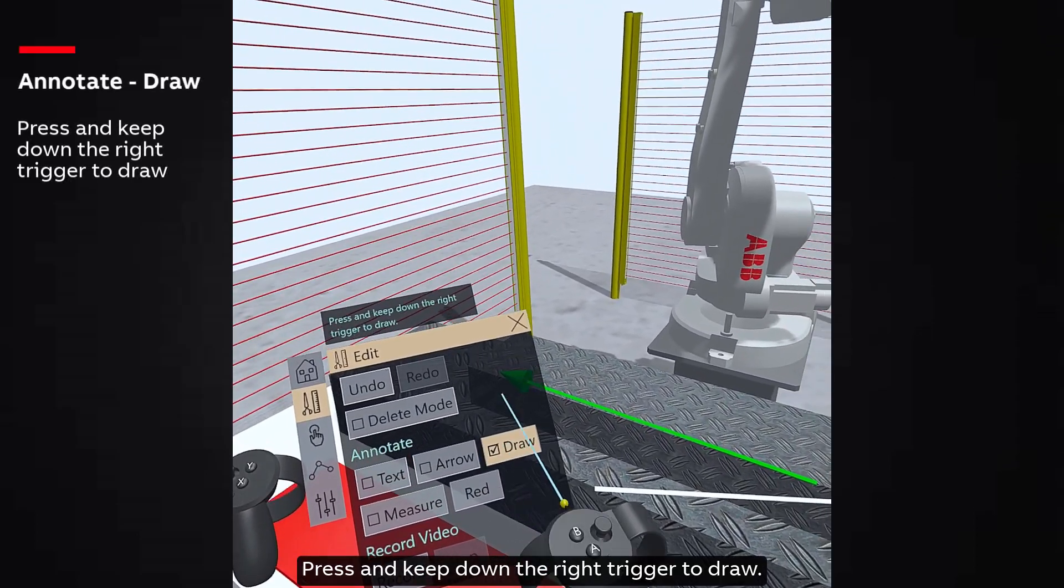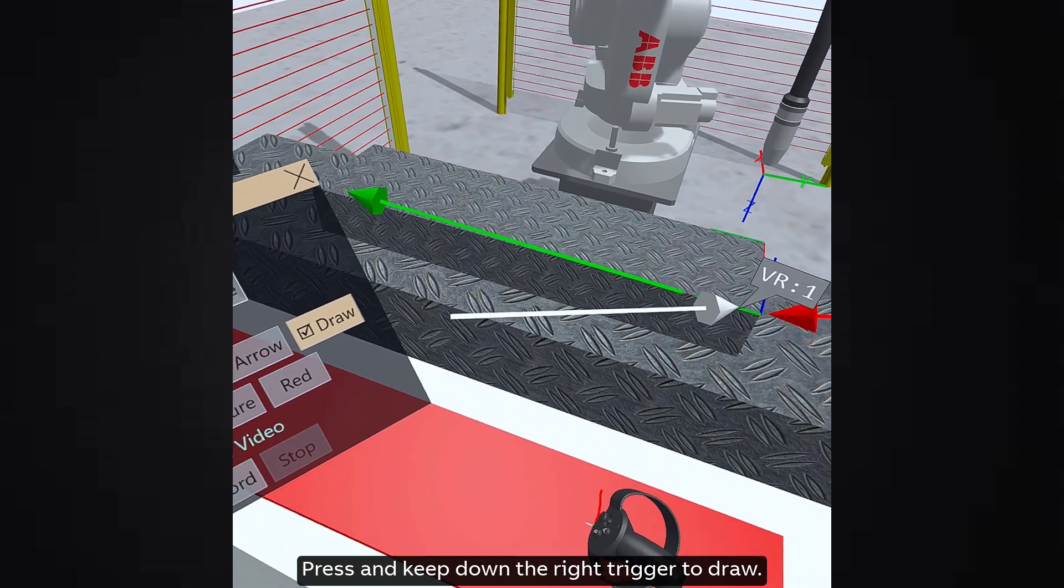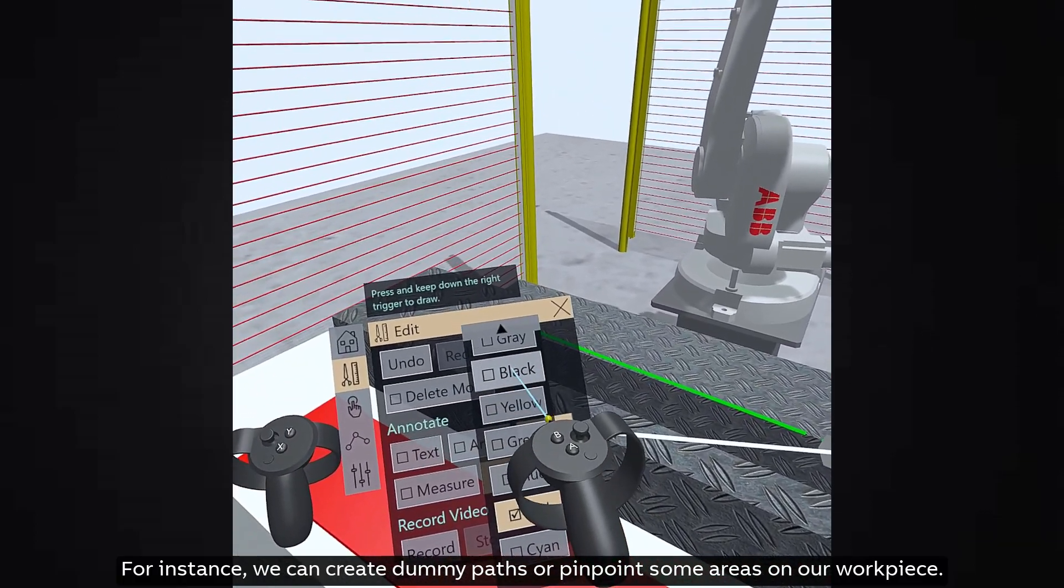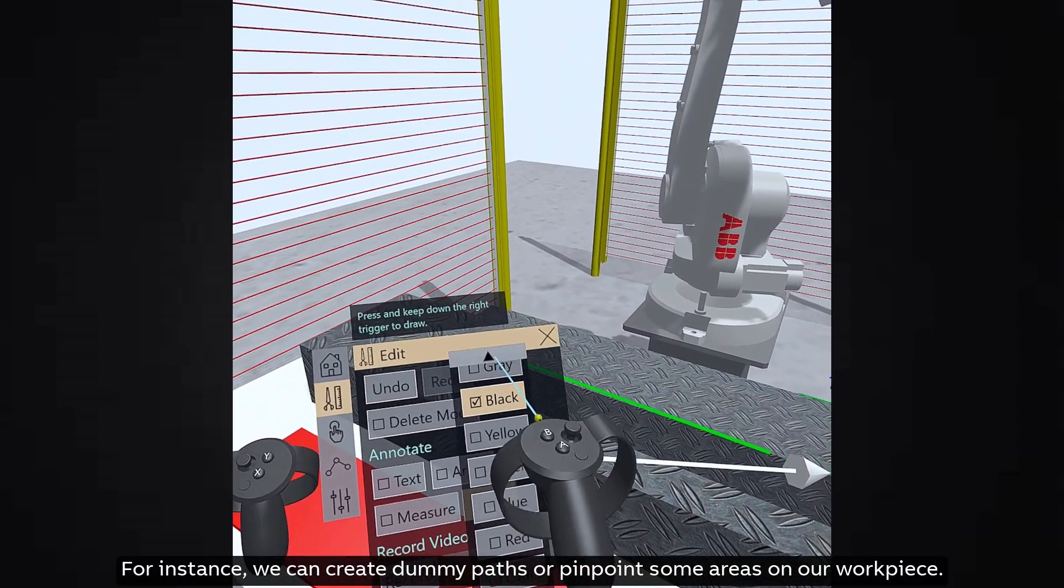Next is draw. Press and keep down the right trigger to draw. For instance, we can create dummy paths or pinpoint some areas on our workpiece.